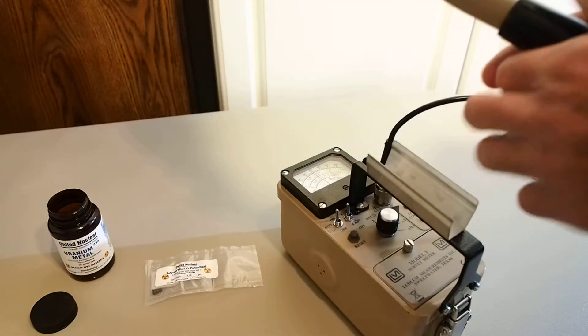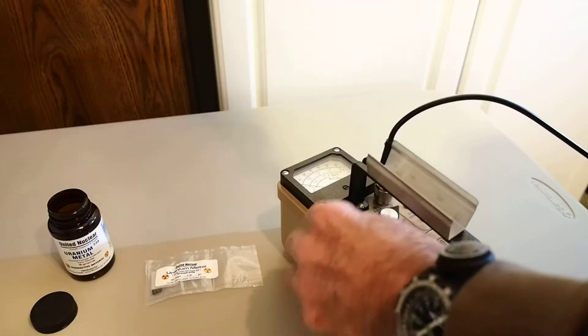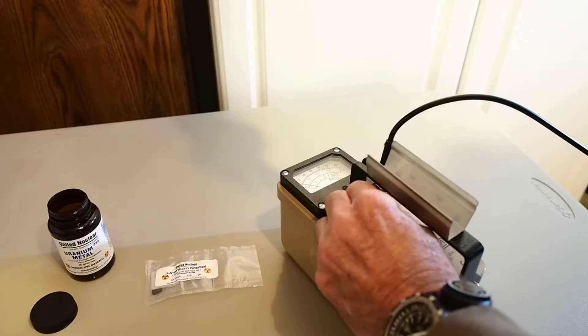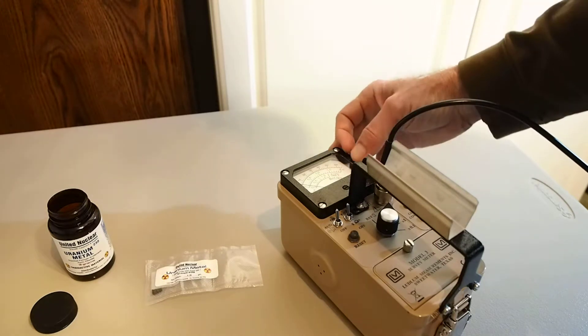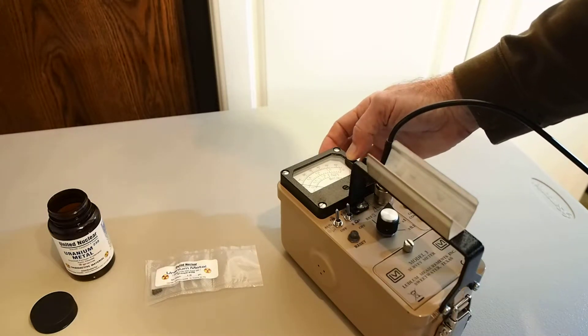We'll back off, reset our instrument, and we'll move up to the x10 scale. At the x10 scale, our meter will max out at about 66,000 counts per minute. So here we go.